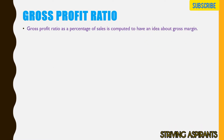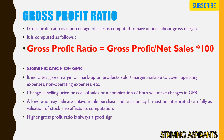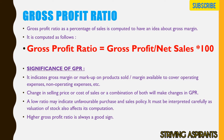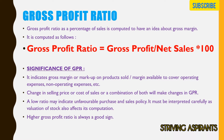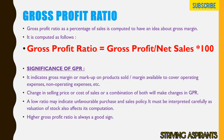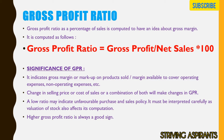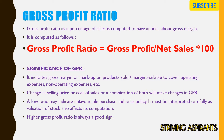The first one is gross profit ratio. The formula is: Gross Profit divided by Net Sales multiplied by 100. This ratio checks what percentage of gross profit is earned with respect to net sales. It indicates the gross margin available to cover operating and non-operating expenses. Changes in selling price or cost of sales will make changes in this ratio. A low ratio indicates unfavorable purchase and sales policy, while a higher gross profit ratio is a good sign.